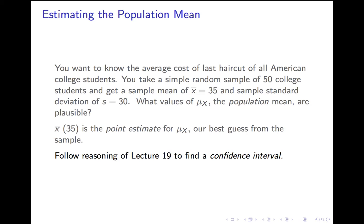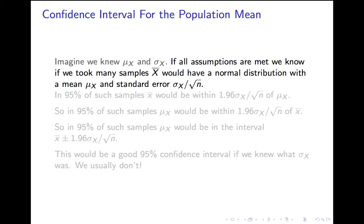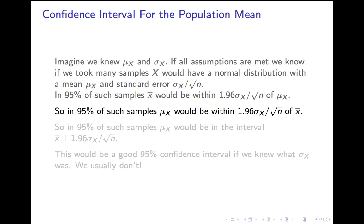We're going to follow the reasoning in the last lecture to find a confidence interval. Imagine we knew the population mean and standard deviation. If all assumptions are met, many samples' x-bar values would have a normal distribution with mean mu and standard error sigma over the square root of n. In 95% of such samples, the sample mean x-bar would be within 1.96 standard errors of mu. Reversing the perspective: in 95% of such samples, the population mean would be within 1.96 standard errors of the sample mean — in the interval x-bar ± 1.96 · (sigma x / √n).